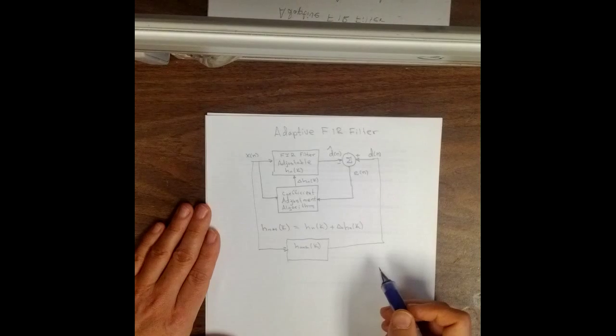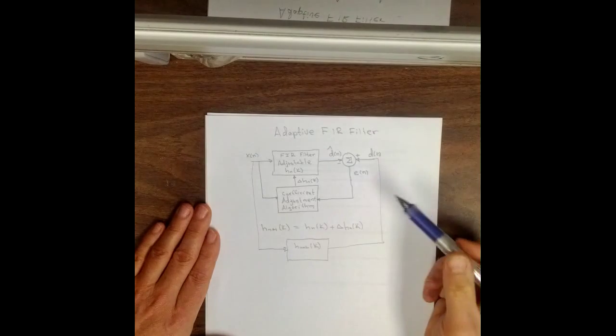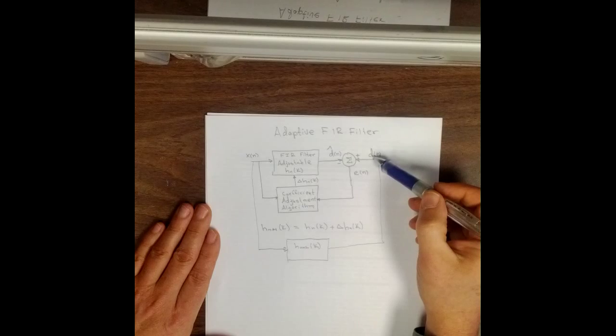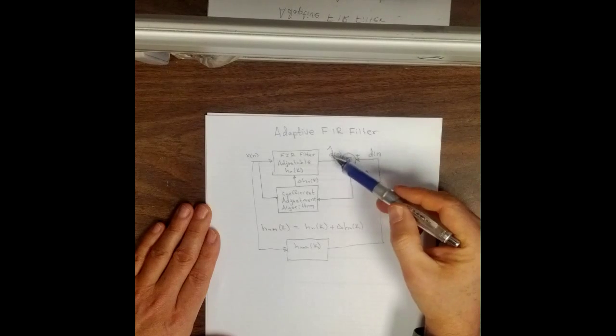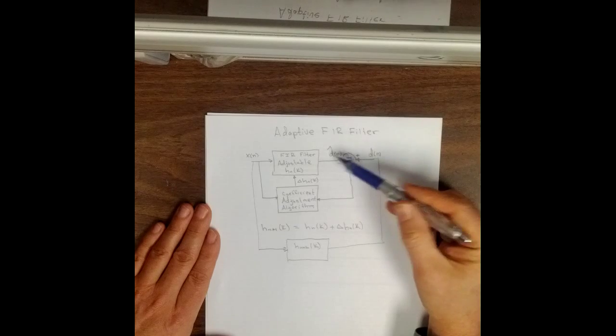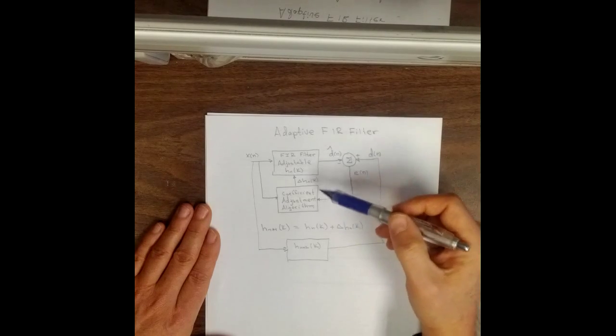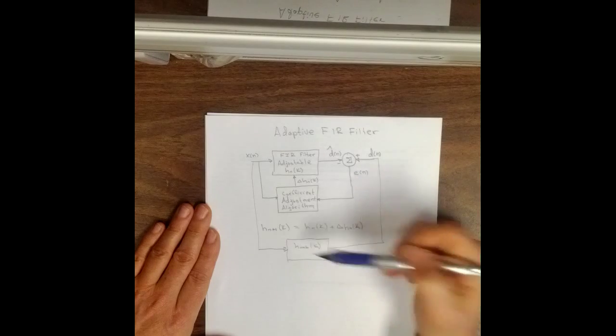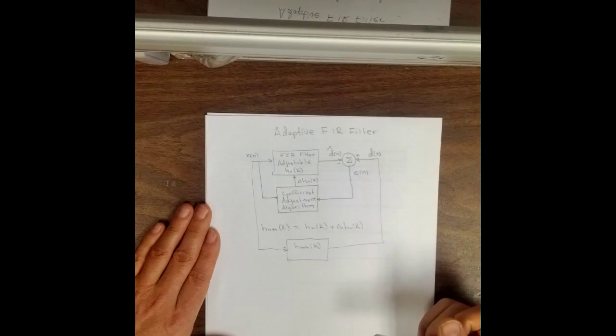then what happens is, if everything's working right, this desired output and the actual output of the FIR filter will converge to be the same, which will make the h sub n of k converge to the h sub unknown of k.